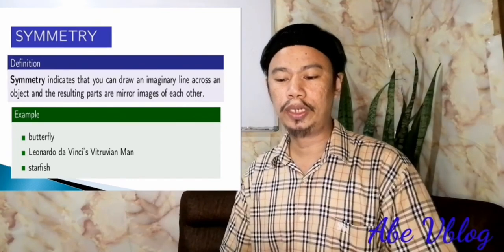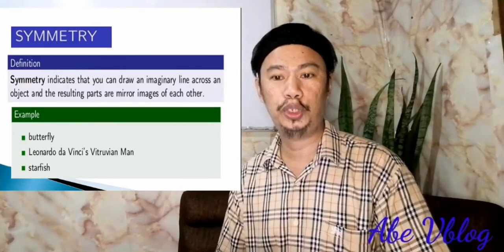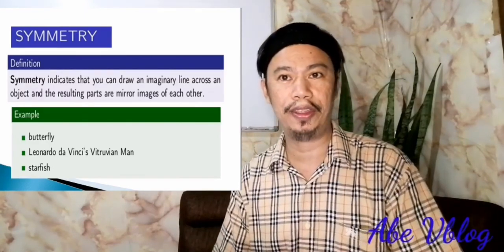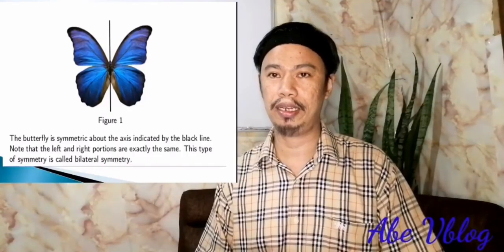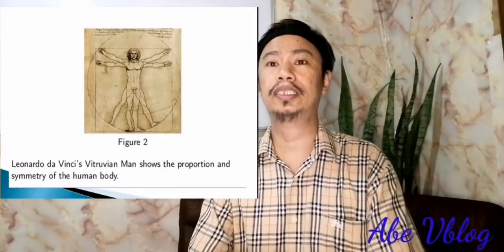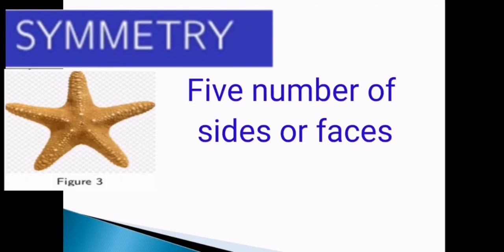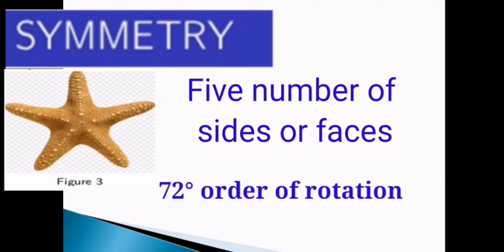Symmetry. Symmetry indicates that you can draw an imaginary line across an object and resolve parts or mirror image of each other. It's just like with your hand. Your right hand and your left hand. That is, the right hand is the mirror of your left hand and vice versa. An example of a good symmetry is the butterfly. The butterfly have a lateral symmetry. And we also have the Vinci Vitruvian man and the starfish. Starfish have five number of sides or faces. The order of rotation of starfish is 72. Note that if you rotate the starfish in 72 degrees, you can still achieve the same appearance as the original position.